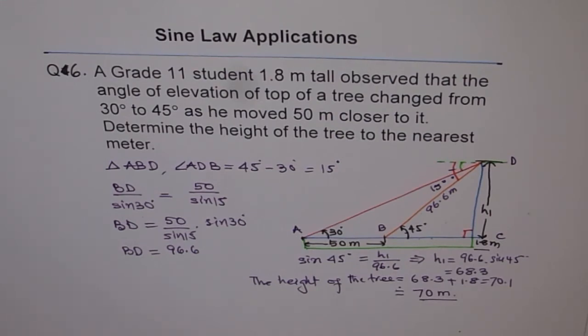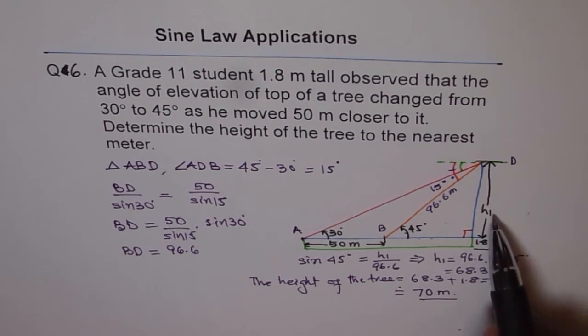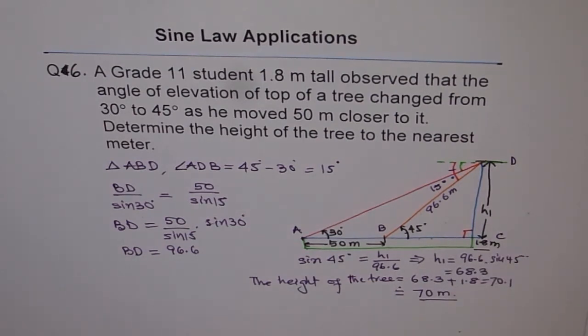So the important thing here is don't forget to add 1.8. That's why I wrote h1. So that reminds me, that's one part of my height. It is not total height, which I need to work out. So that's a good question to work on. And I hope you understand how to do these kinds of problems using sine law. So with that, we are almost at the end. Few more questions to go. And then we'll move on to cosine law. Thank you.